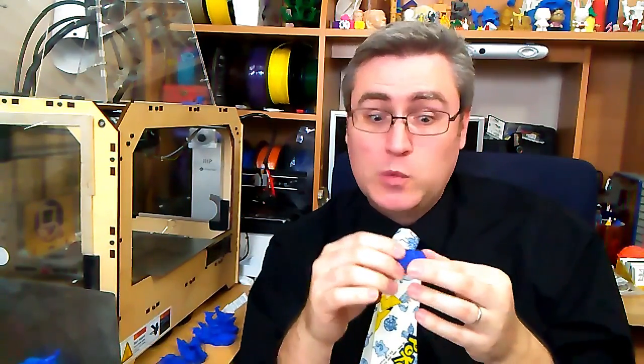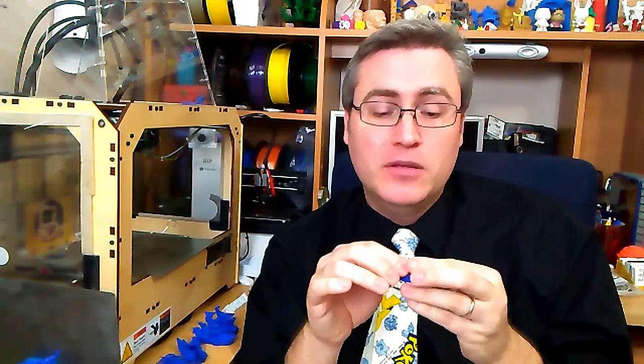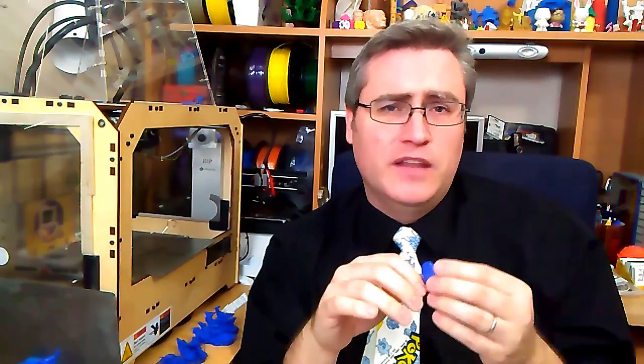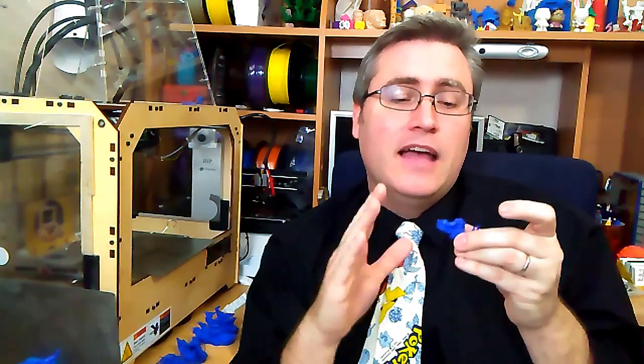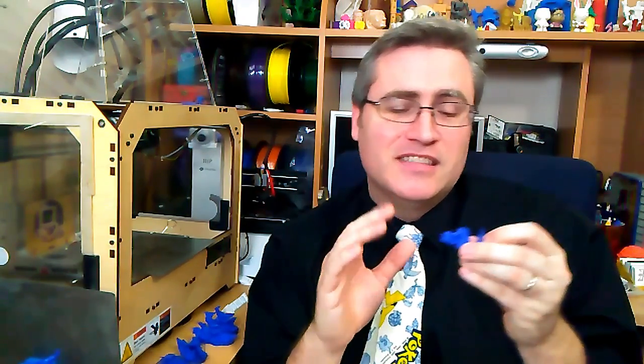So with Dura, since supports don't want to remove since it adheres so well to itself, and it really does. The layers are adhering better than almost any material I've seen outside of Ninja Flex. But it means that you can't use supports with this. You have to design with Y, H, and T in mind so that you can have those gentle overhangs and things like that.